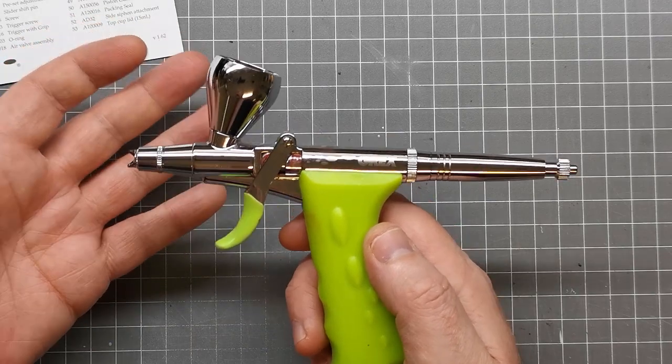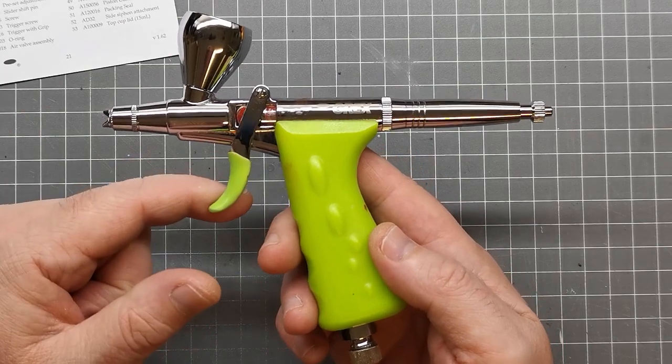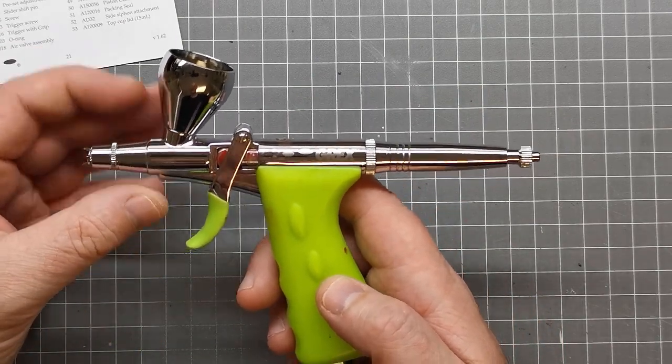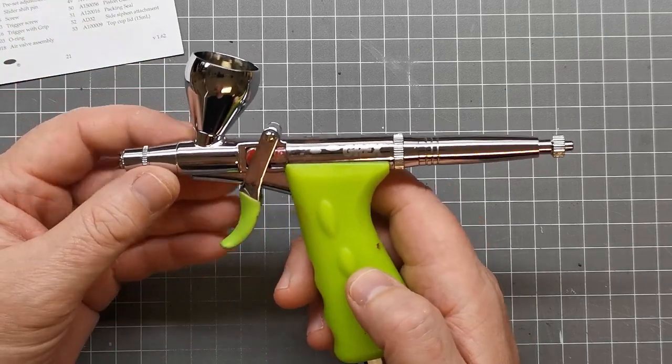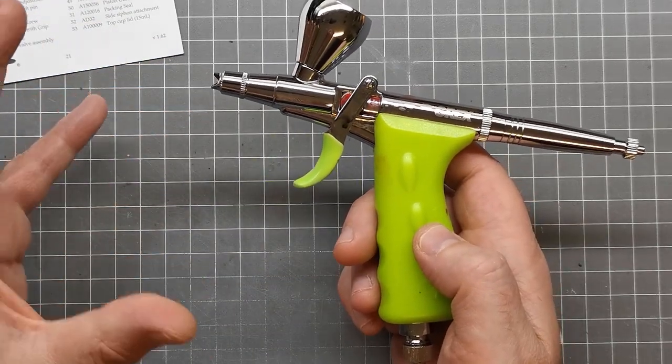First, a little introduction. This is the Grex Tritium TG. It's a pistol-style airbrush, double-action, gravity feed. This is my go-to airbrush. I use this all the time. I use it for water-based acrylics and lacquers.